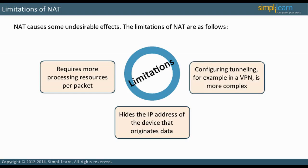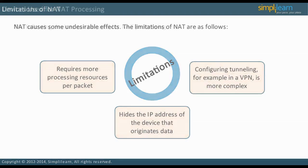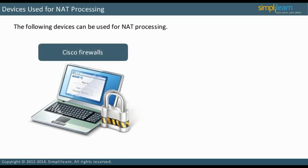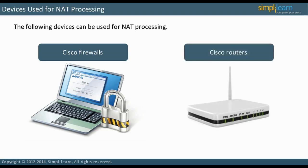Let us discuss the devices used for NAT processing. Cisco offers a line of firewalls called adaptive security appliances, and NAT can be performed on these appliances. Cisco routers can also perform NAT. Normally, the device that performs NAT is directly connected to the Internet Service Provider, ISP.